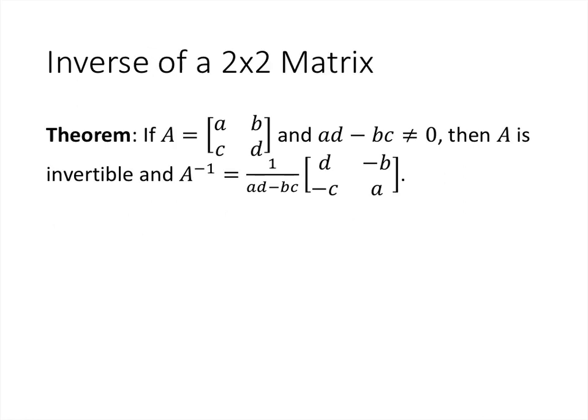It's not too hard to figure out the inverse of a 2 by 2 matrix. If capital A is the matrix [a, b; c, d], and if the calculation AD minus BC does not equal 0, then A is invertible and its inverse is given by that formula. We can prove this by computing whether A times A inverse and A inverse times A both work out to be the identity.